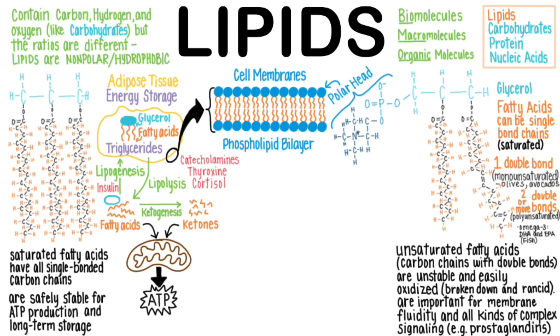In the phospholipid bilayer, the polar heads stick out toward the water environment on both sides of the membrane, and the non-polar tails that are hydrophobic point toward the middle, since they are repelled by the water.